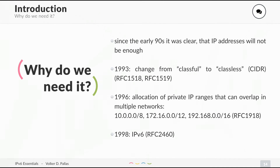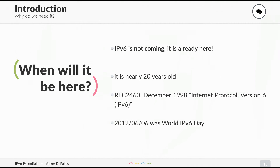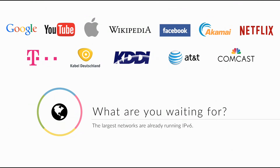Now you know why we need it. But when will it be here? Well, IPv6 is already here — it is nearly 20 years old now, since RFC 2460 in 1998. On June 6, 2012, there was World IPv6 Day, and a lot of big corporations activated IPv6 in their networks and internet services. What are you waiting for? You probably know most of these: Google, YouTube, Apple, Wikipedia, Facebook, Akamai — which hosts most of the images on the internet — Netflix, and a lot of access providers are already using IPv6.